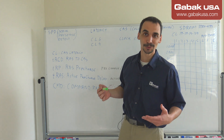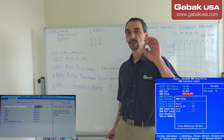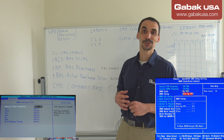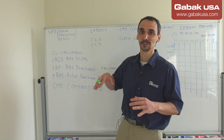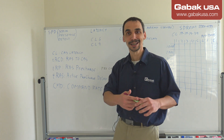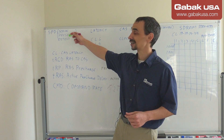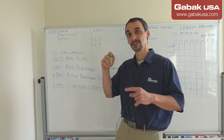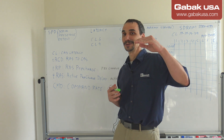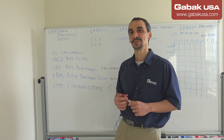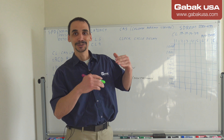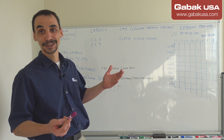If you go into the BIOS you'll see SPD — Serial Presence Detect. The RAM has a small ROM inside that tells the system what latency is proper for the motherboard. If you leave it on automatic, the system will assign the correct latency. If you want to overclock, you can disable SPD, set it to manual, adjust the delays, increase voltage, and increase the RAM frequency.